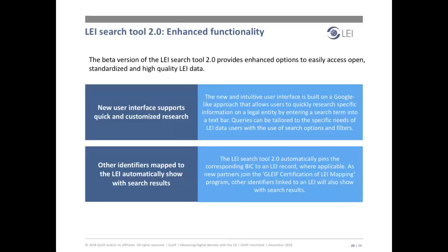Version 2.0 of the search tool introduces additional features, including a new and intuitive user interface built on a Google-like approach that allows users to quickly research specific information on a legal entity by entering a search term into a text bar. Queries can be tailored to the specific needs of the user via search options and filters. In addition, other identifiers mapped to the LEI automatically show with search results. The new tool also returns the corresponding BIC to an LEI record where applicable. As new partners join GLEIF's mapping program, other identifiers linked to an LEI will show with search results.